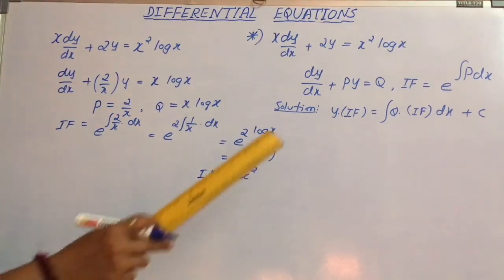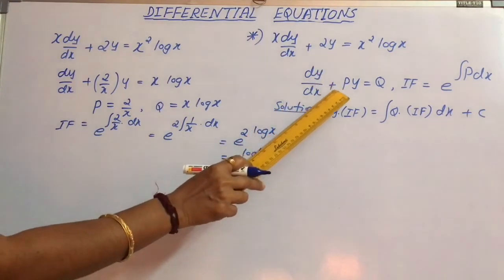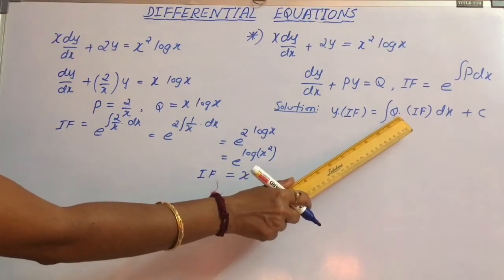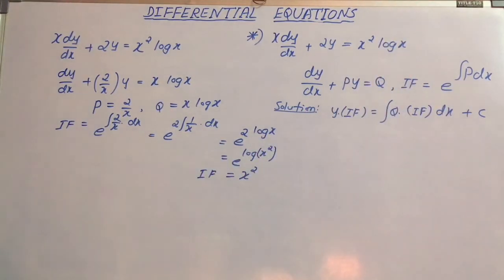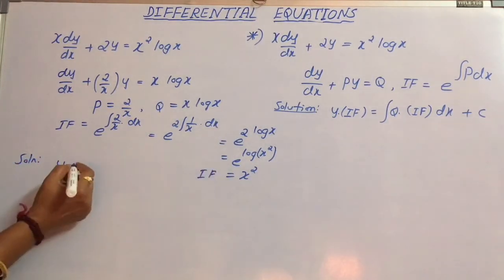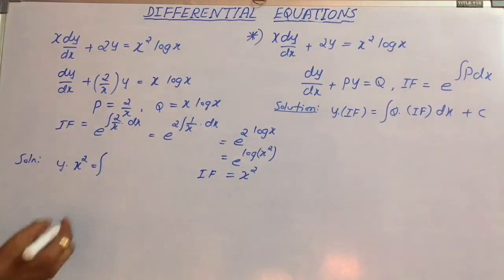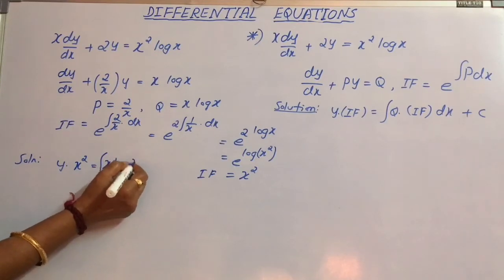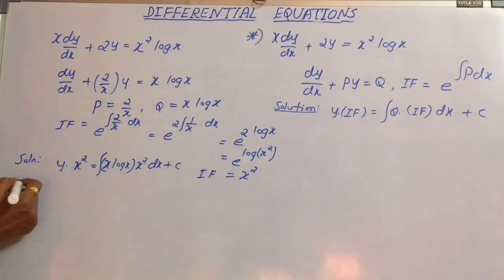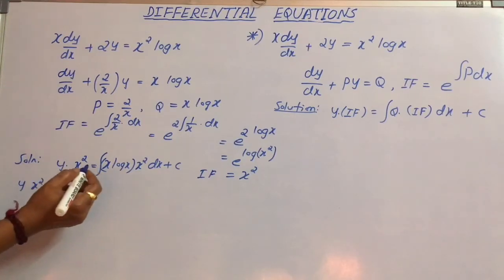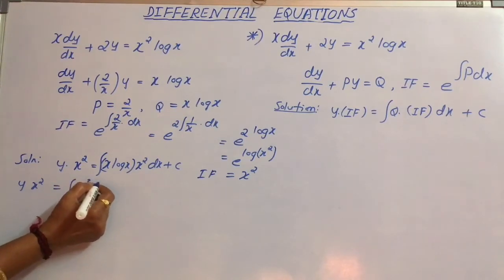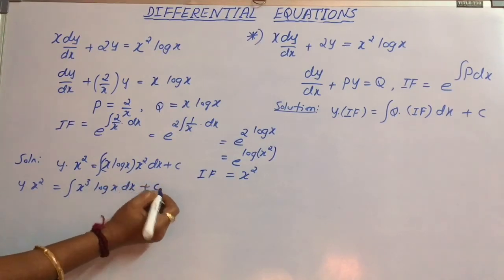Now consider the solution. The solution of the differential equation dy/dx + Py = Q is y times the integrating factor equals the integral of Q times the integrating factor dx plus c. Therefore, the solution becomes y·x² = integral of Q, which is x log x, times the integrating factor x², dx plus c. This gives y·x² = integral of x³ log x dx plus c.